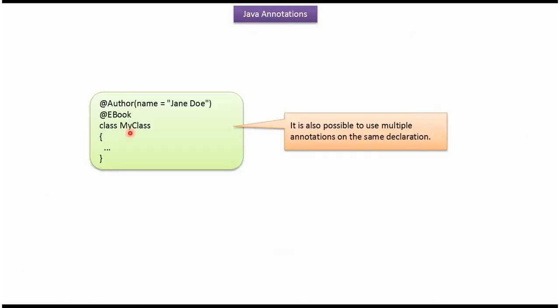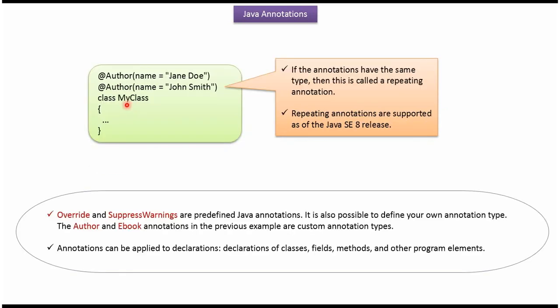Here you can see MyClass. Here multiple annotations are applied. This is possible. Here you can see MyClass and two times the @Author annotation is applied. This is called a repeating annotation, and repeating annotations are supported in Java 8.